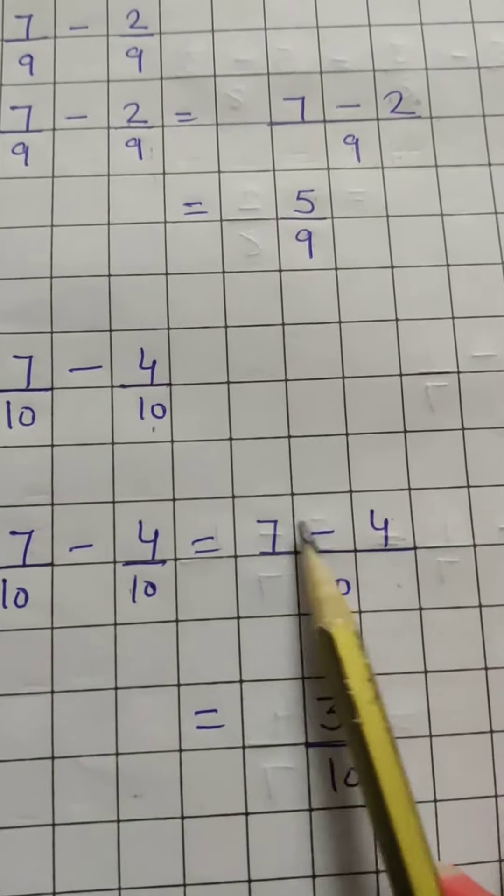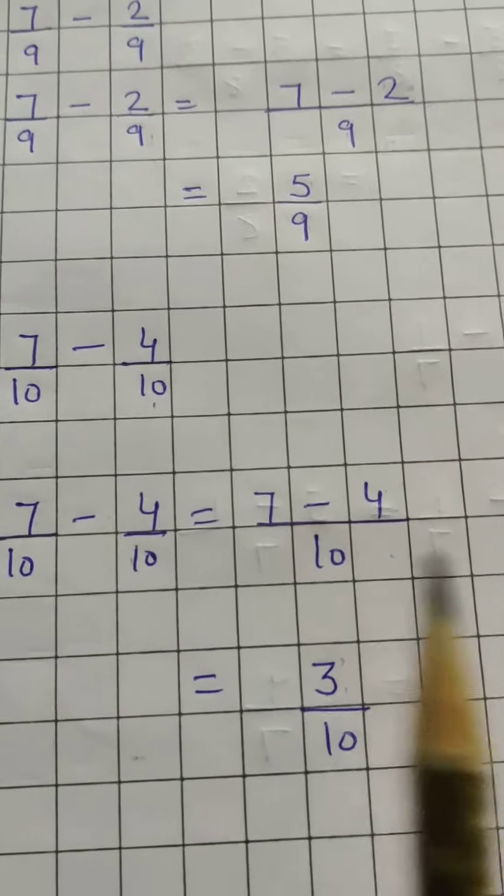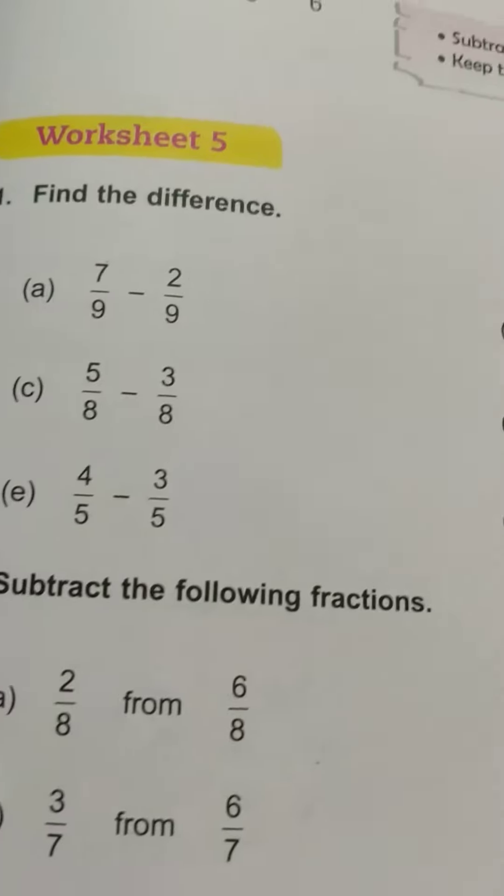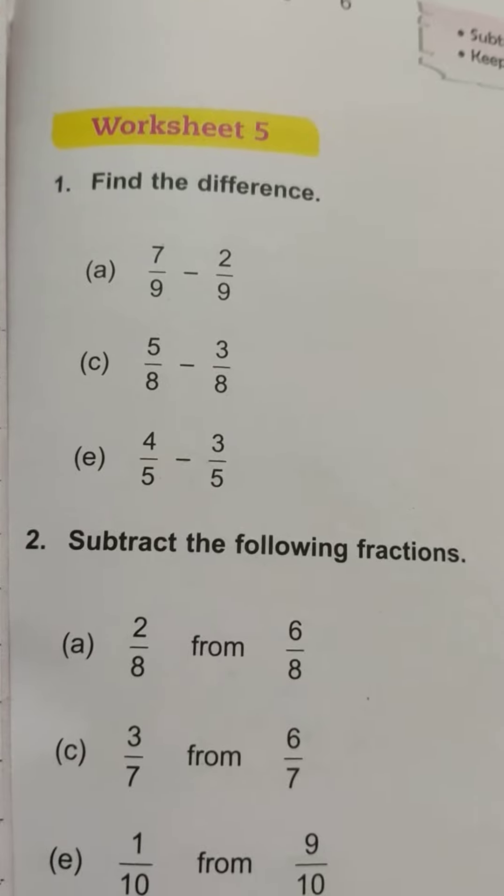Seven minus four is three, meaning three by ten. Okay, so you have to do this question one in your fair notebook. Thank you.